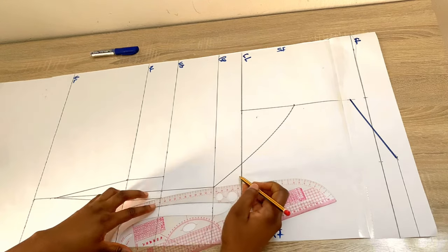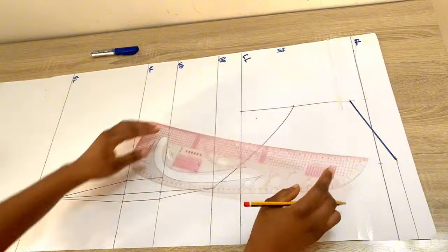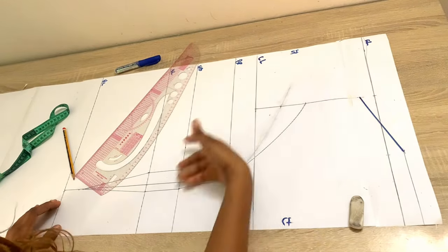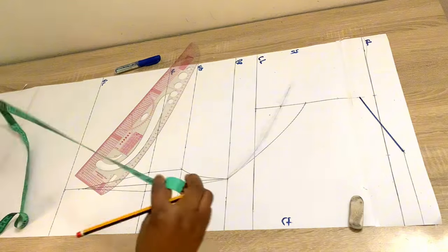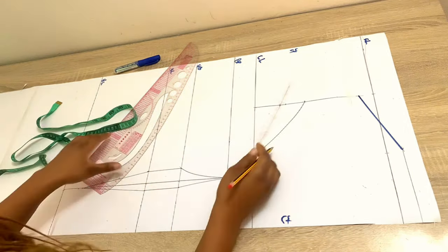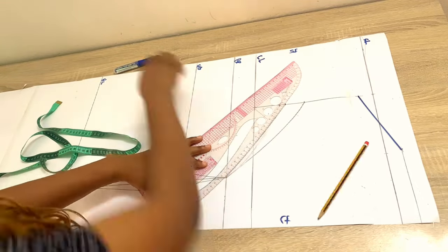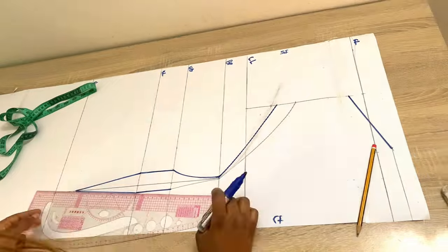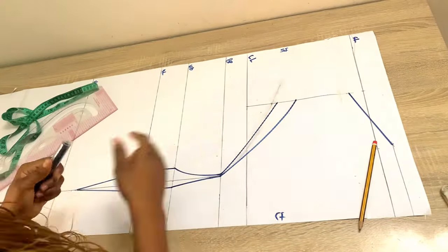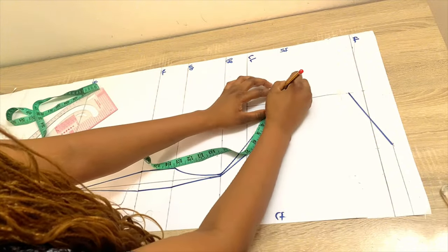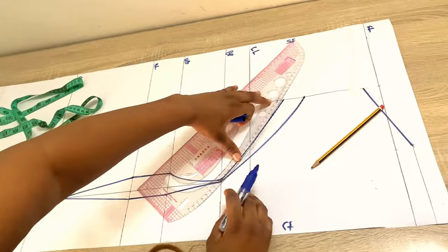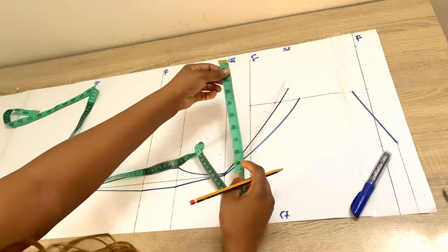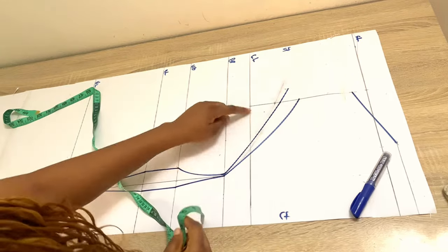Connect the lines together. I'll connect a curve on both sides from the under bust to the bust point — the center front doesn't need much curve, but the other side needs more, so use the side of your curve ruler. I made a mistake on one line so I erased and redid it. From the midpoint of the armhole line, come down by 1.5 inches, mark it, and use a curve to connect it into the bust point. I'll be outlining with marker since the pencil is faint.